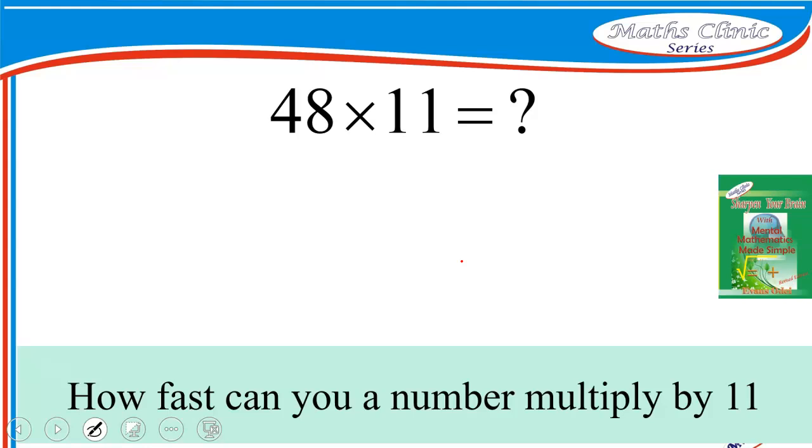48 times 11. Again, we have 4 and 8 apart. 4 plus 8 is 12. In this case, we can't put all the 12 here. So we put the 2. We'll do carry forward, or we carry the 1 to the 4 here, which means our answer becomes 5, 2, 8. And so 48 times 11 is 528.